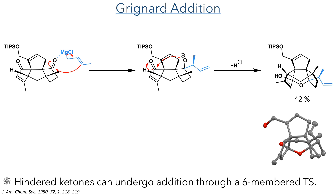Taking this compound forward, it then took part in a Grignard reaction. It was reacted with 2-butenyl magnesium chloride, and this added to the non-conjugated ketone. Unlike a typical Grignard addition where the carbon bound to the magnesium adds to the electrophilic centre, this system undergoes allylic addition through a six-membered transition state. This can occur for hindered ketones where the addition step is slow.